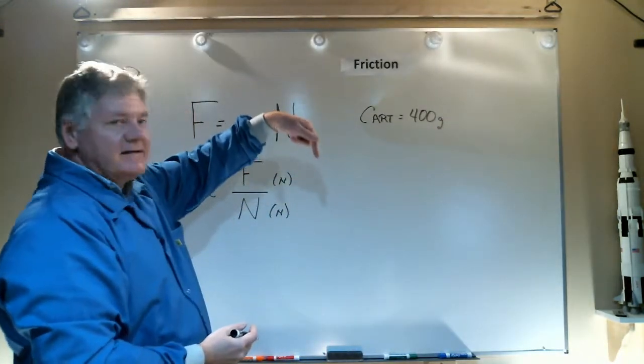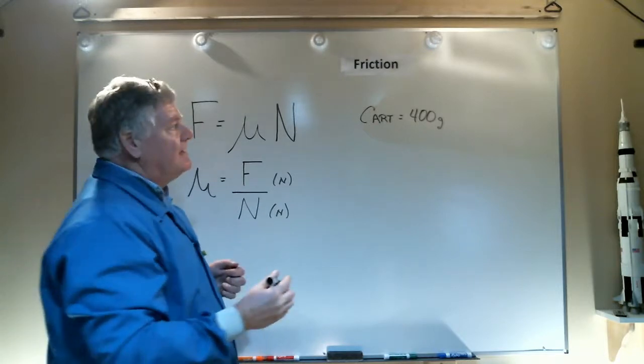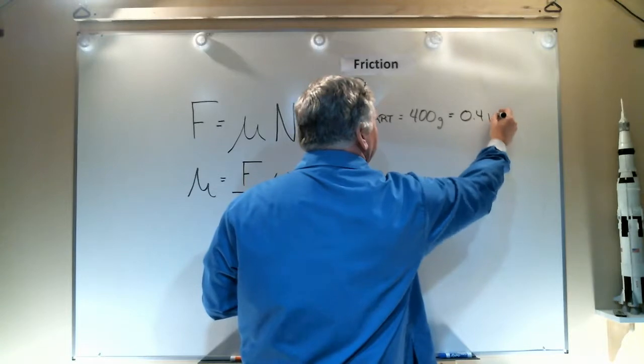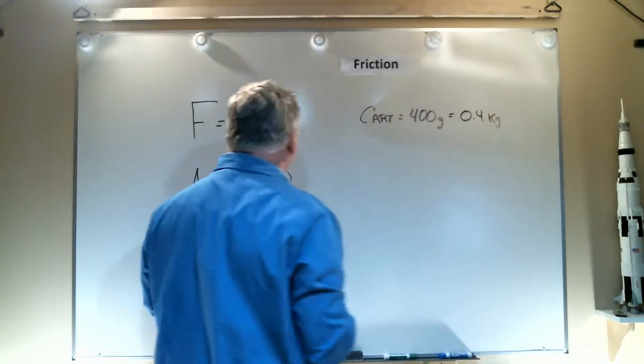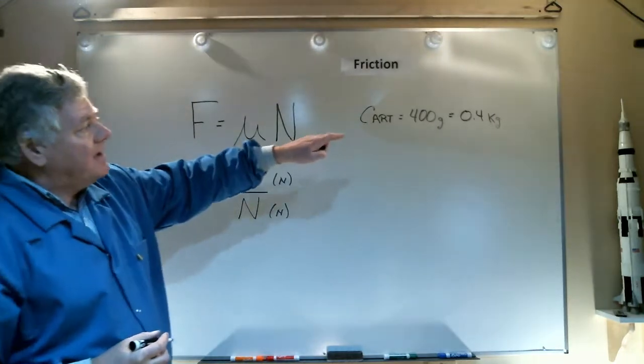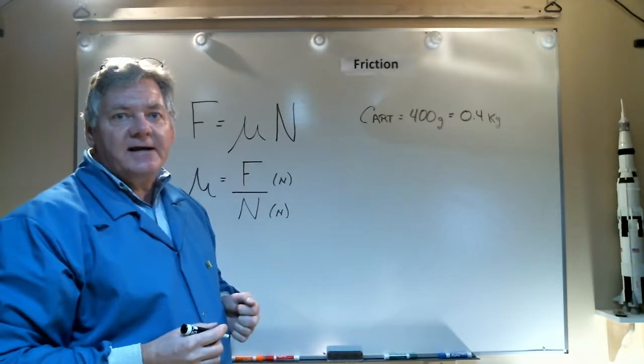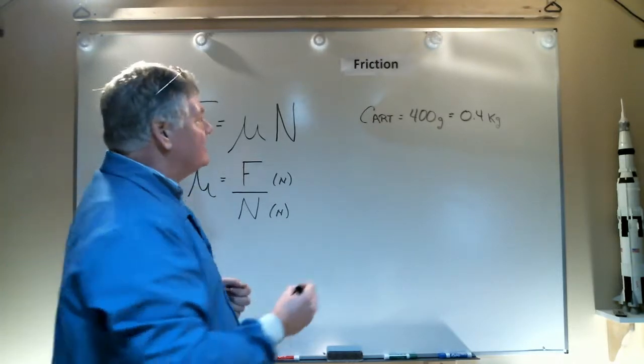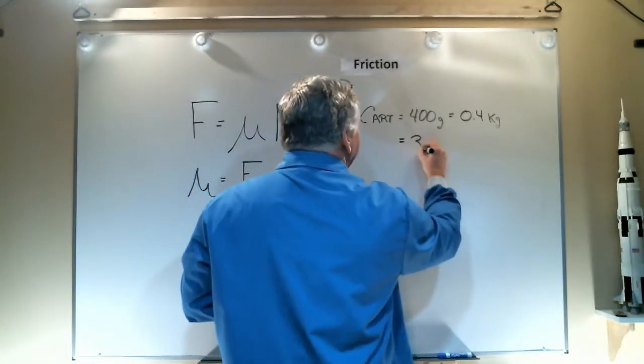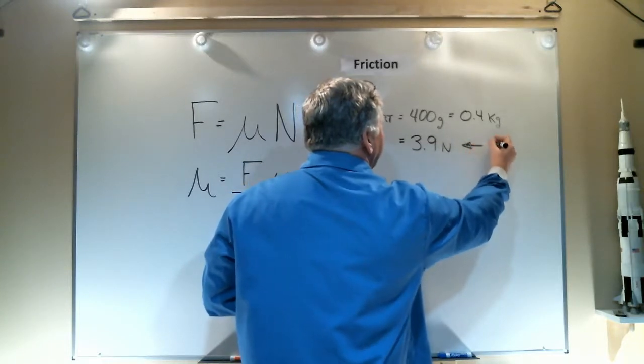Now the cart has a mass of 400 grams, and that represents the force coming down through the surface I'm testing. That 400 grams equates to 0.4 kilograms. I want that normal force to be in newtons. So if I multiply the mass of the cart times acceleration due to gravity, 9.8 meters per second squared, I can get the weight of the cart. That equals 3.9 newtons. So that is my N.